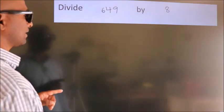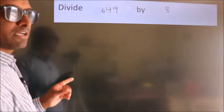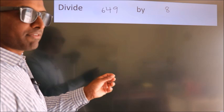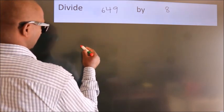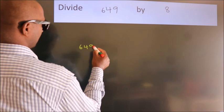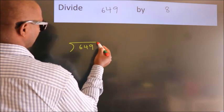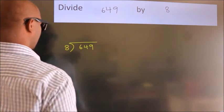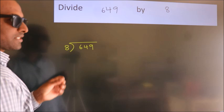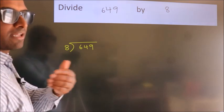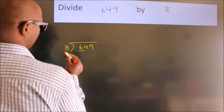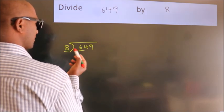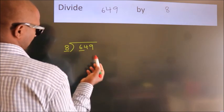Divide 649 by 8. To do this division, we should frame it in this way: 649 here, 8 here. This is your step one. Next, we have 6 here. 8? 6 is smaller than 8, so we